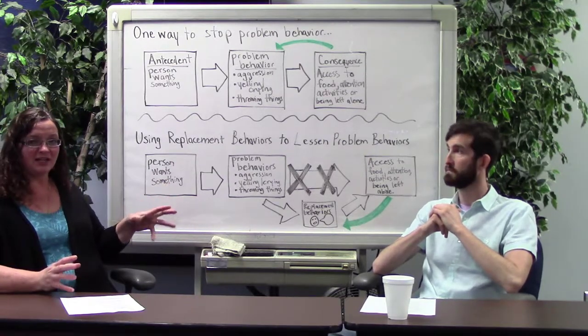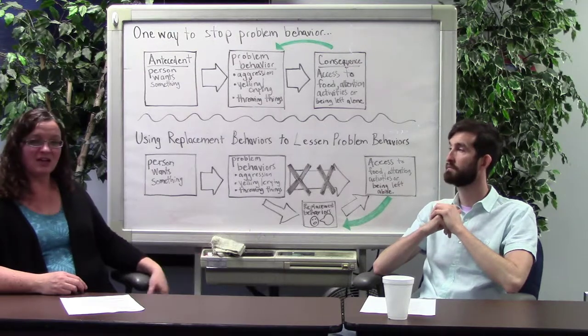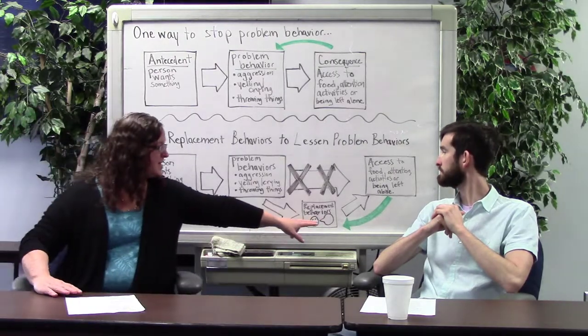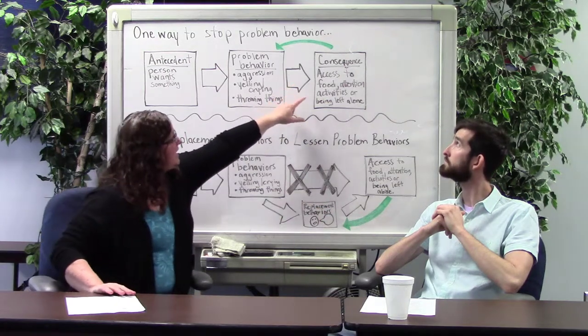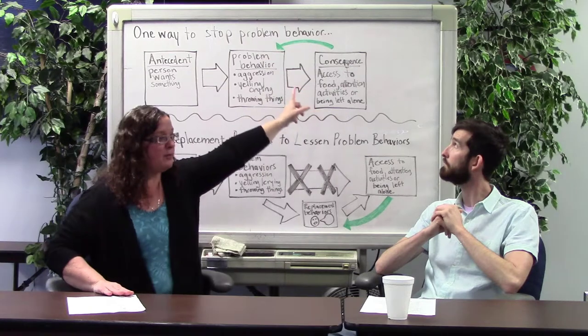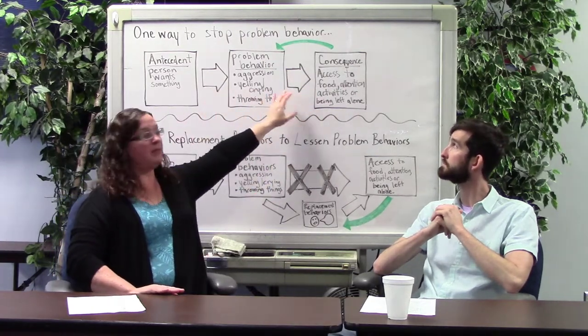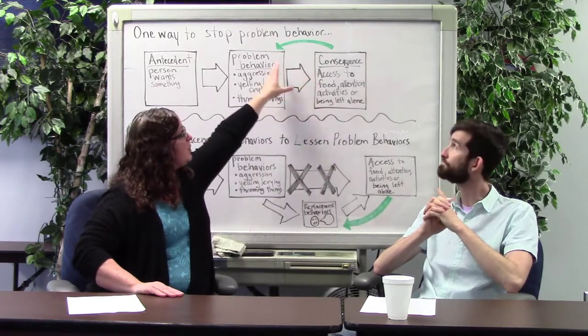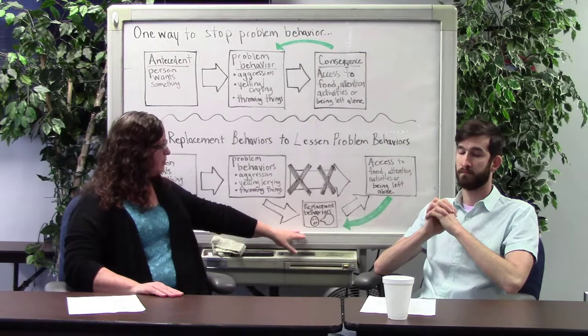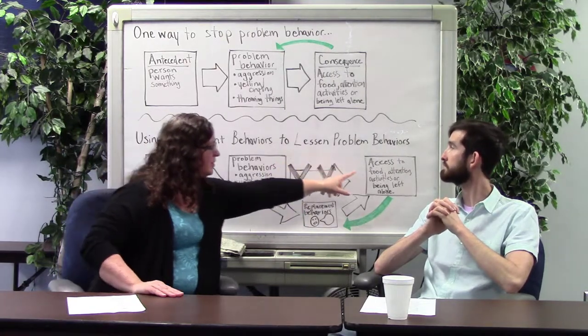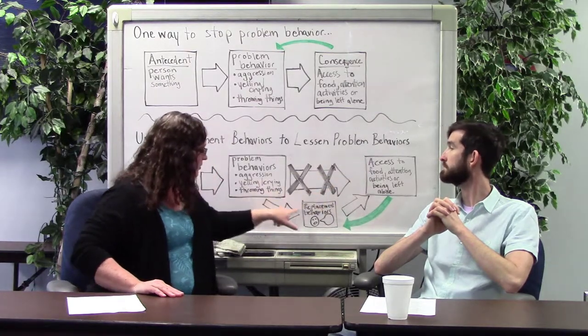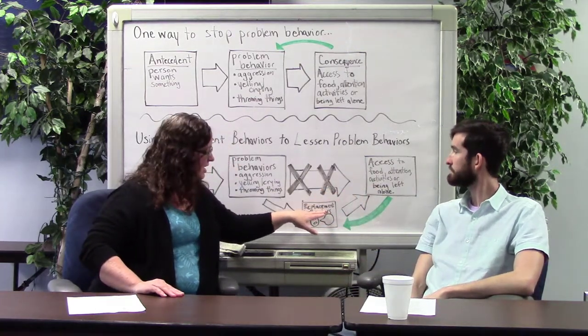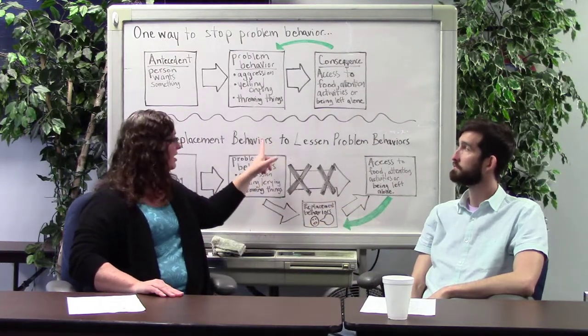And we're explaining this, kind of the reasoning and the scientific basis of it. But be yourselves as you do this. Also, there's these green arrows on here, and I forgot to talk about it earlier, but that consequence is reinforcing the behavior that occurs right before it. So the top part is our problem behavior. So the problem behavior occurs and then they get access to food, attention, or activities or being left alone. That consequence strengthens this problem behavior. And if you see down here in our replacement behavior model, instead of problem behavior gets us access, we go replacement behavior goes to access. So the thing that happens right before the access is the replacement behavior. That's what gets strengthened instead of the problem behavior.